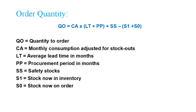Multiply the adjusted consumption by your average lead time plus procurement period or review period, then add safety stock and subtract the combined value of stock in inventory and stock on order.